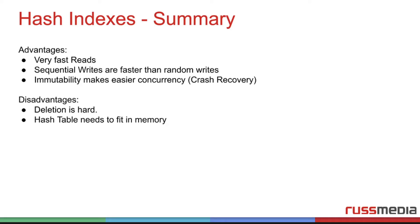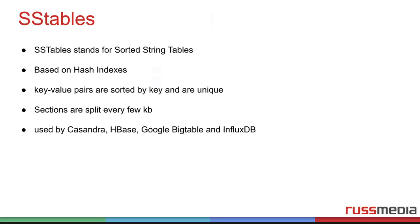As a workaround, smart people — I think Google created it first — created a system based on this called SS tables. It stands for Sorted String Tables. They are based on hash indexes, but the key-value pairs are sorted by key and are unique. The sections are again split every few kilobytes. This is used by Cassandra, HBase, Google Bigtable, and InfluxDB.